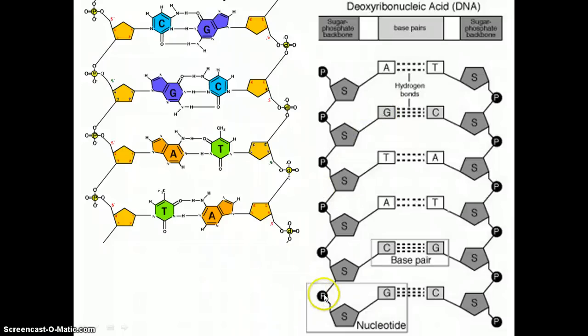Remember a nucleotide is a phosphate, a sugar, and one of the bases. So, here's a nucleotide. Here's a nucleotide. So, that's one, two, three, four, five, six nucleotides here. Plus those six makes a total of 12 nucleotides.